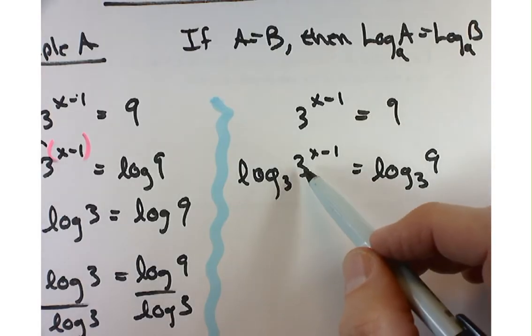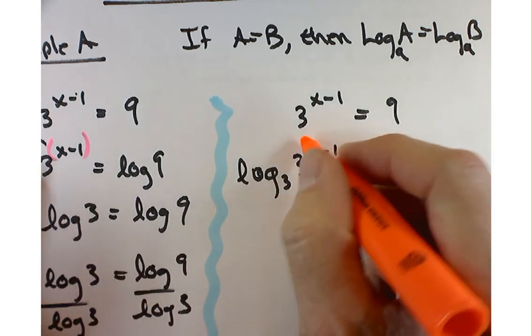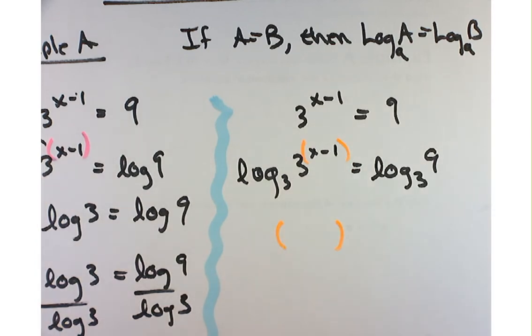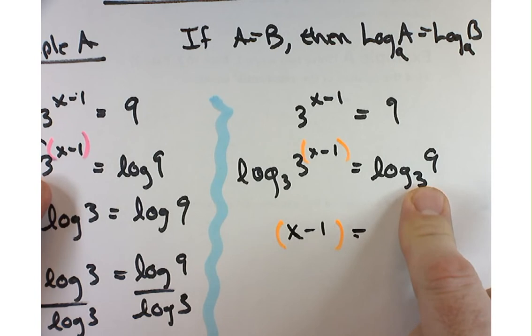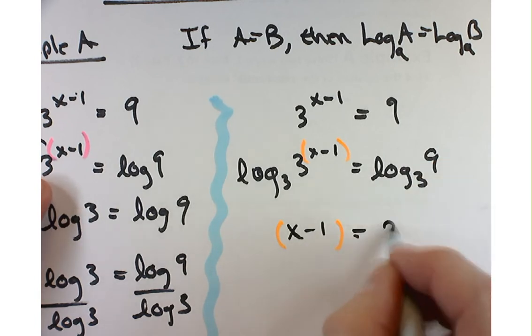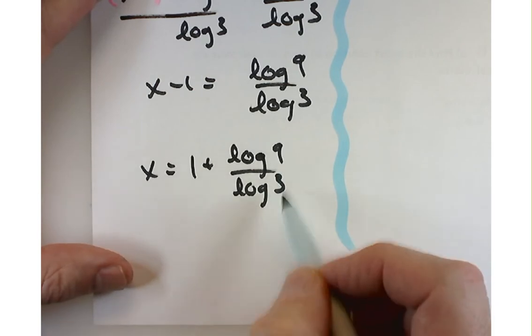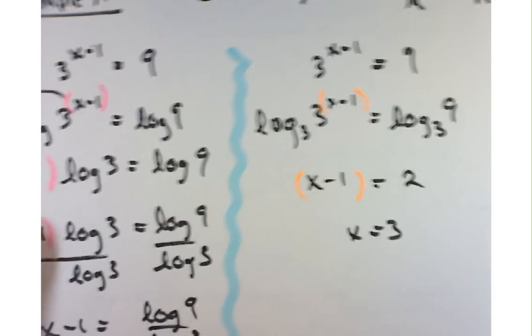Now it's time to use one of our properties of logarithms from section 4.4: log base b of b to the x equals x. When the base here and the base here match, you get some real nice simplification — it simplifies down to just x minus 1 equals log base 3 of 9. What power of 3 gives you 9? 2. So that means x equals 3.